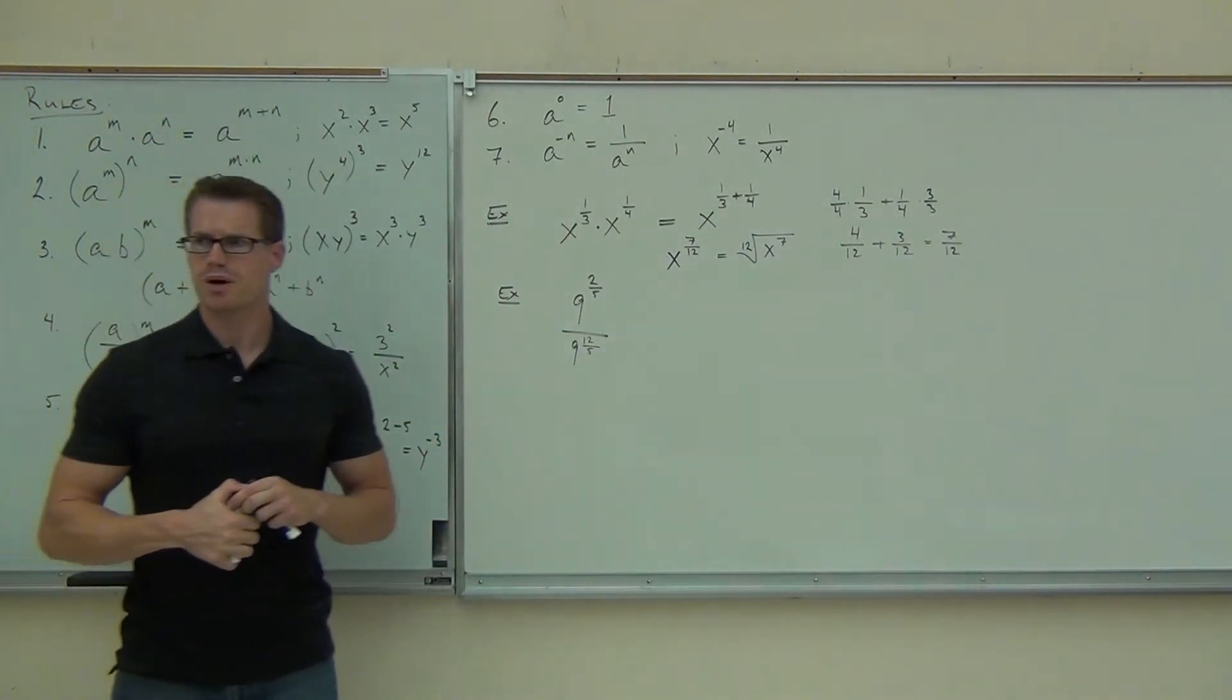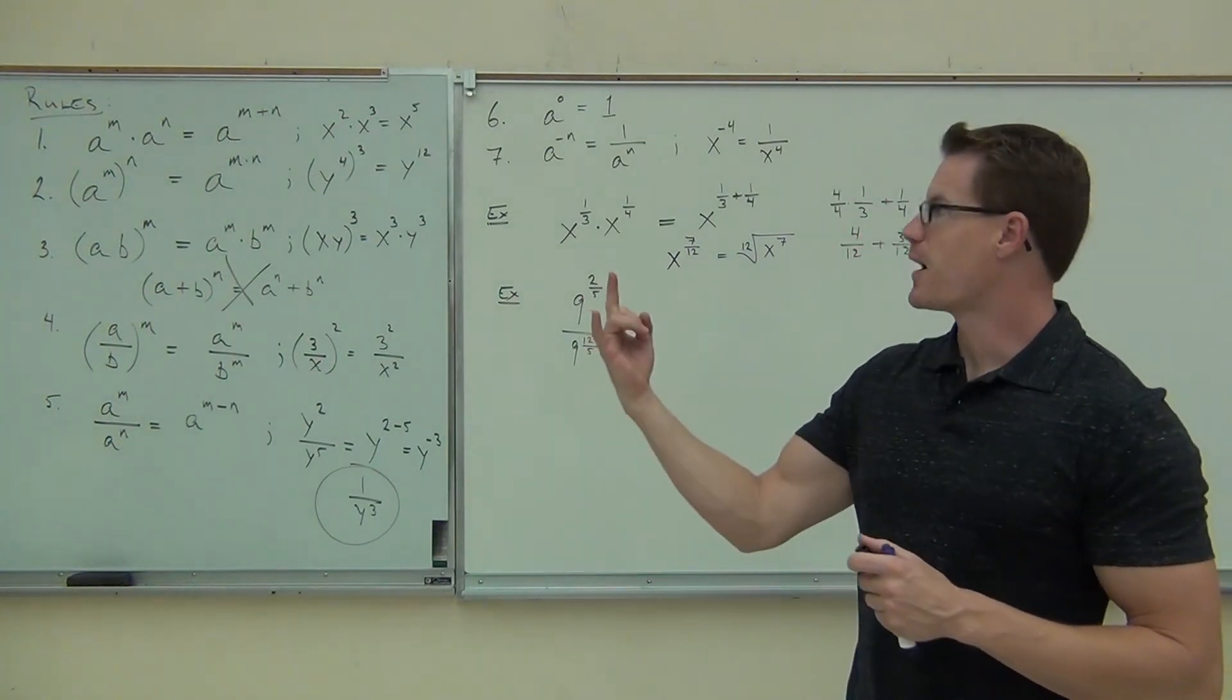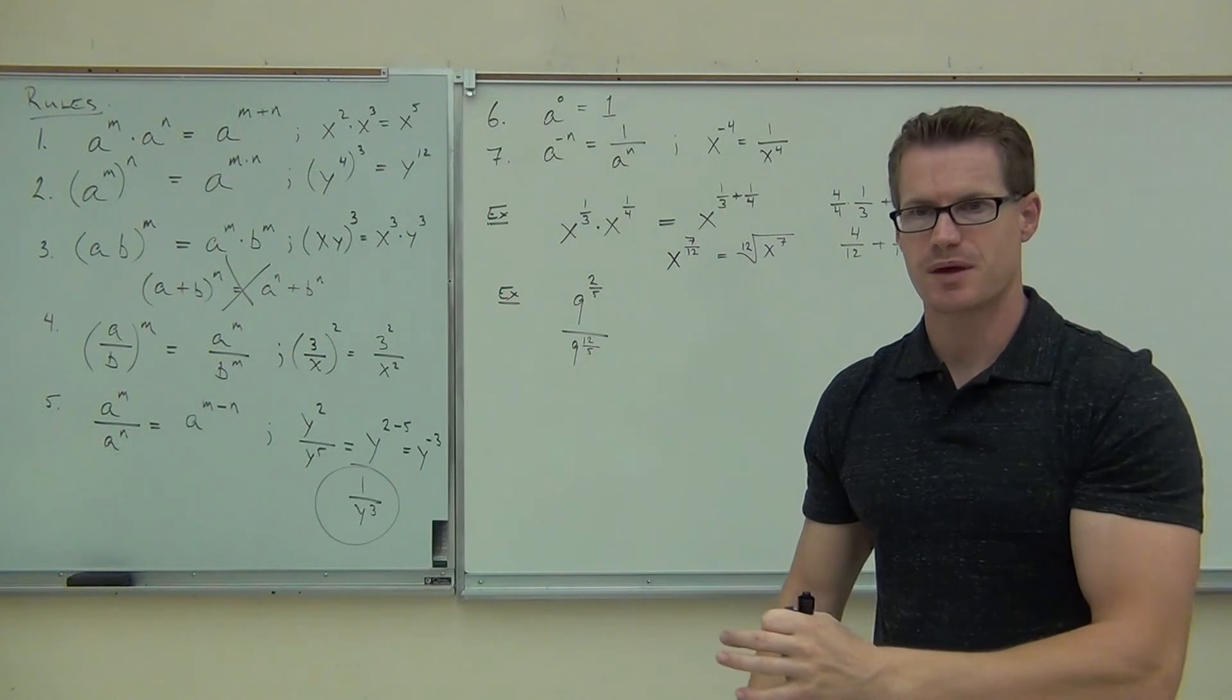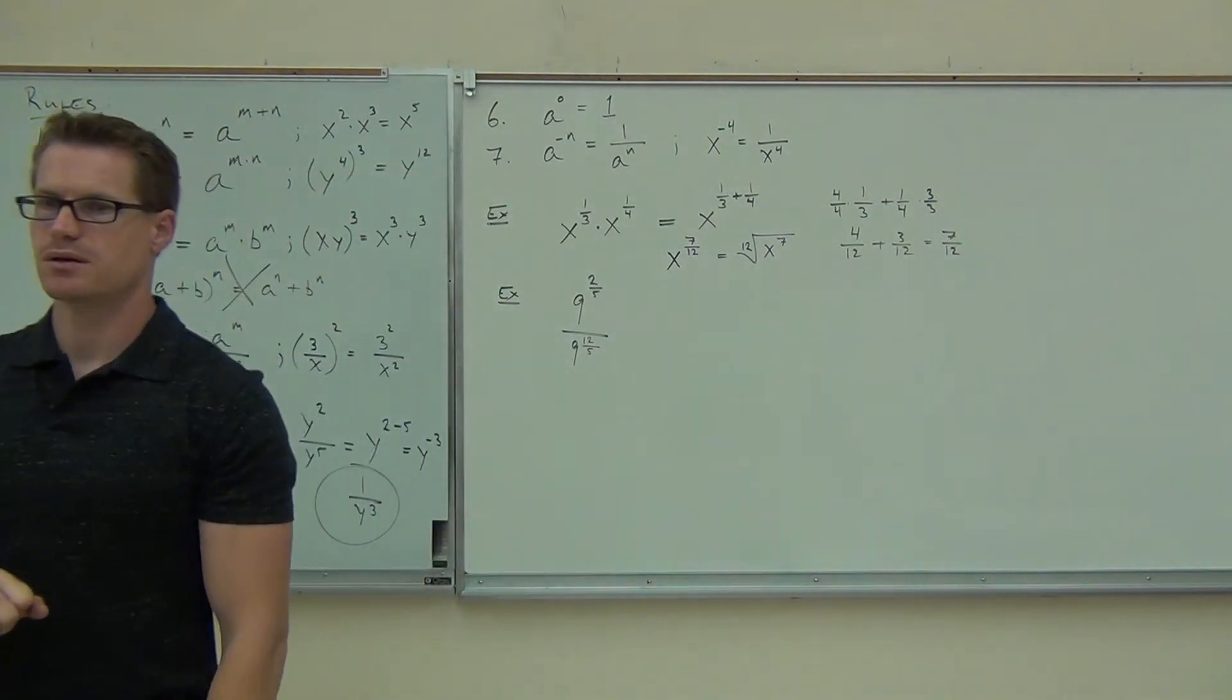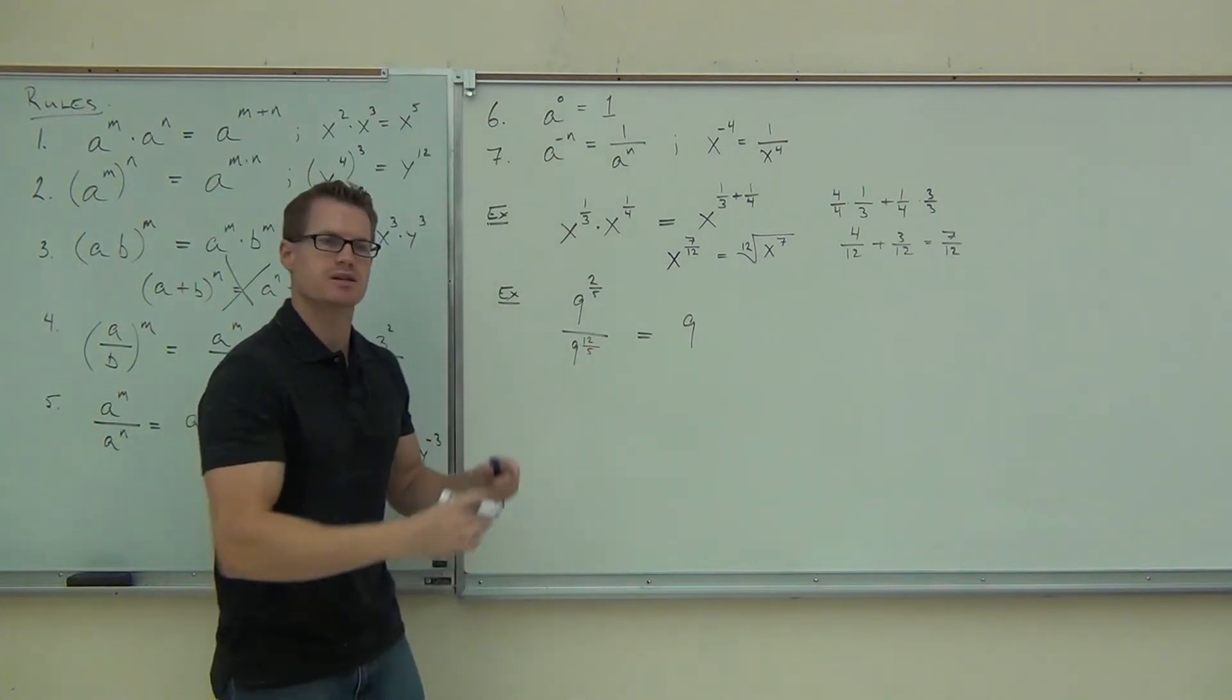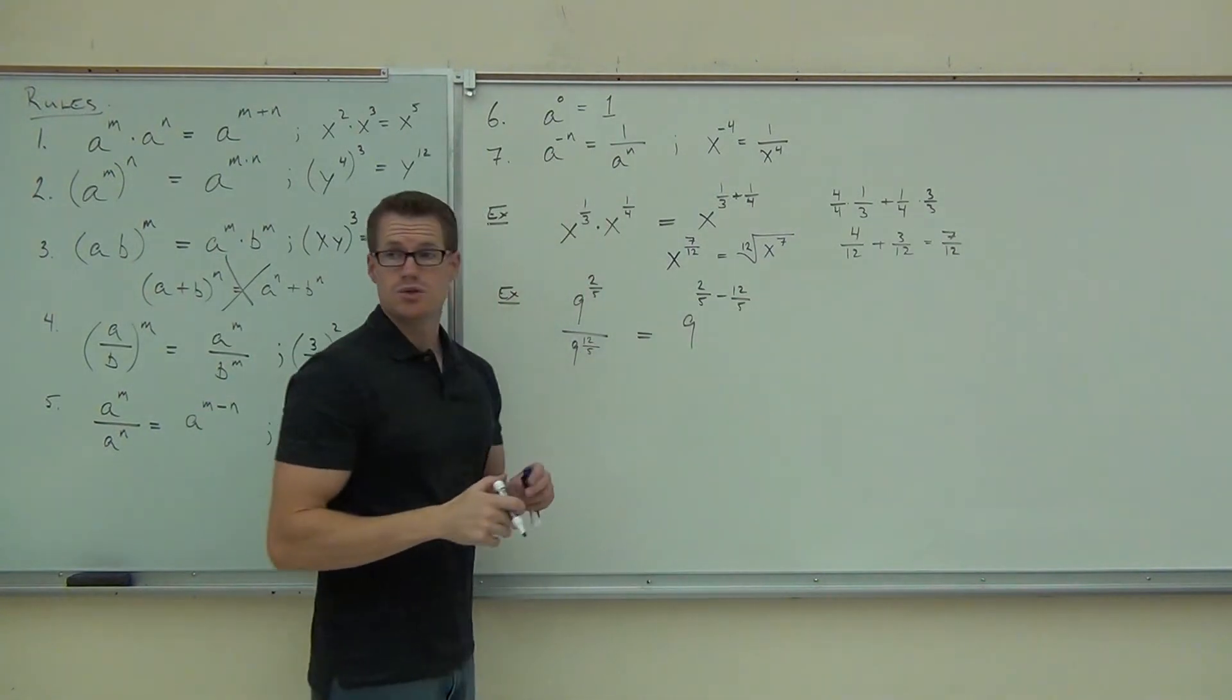9 to the 2/5 over 9 to the 12/5. Hey, let's look back at our rules. Can you tell me what rule are we most like, 1 through 7? There's only two that have fractions, right? There's 4 and there's 5. The 4 would be everything raised to a power. We're not there. We're actually at number 5, where we have something raised to a power and something raised to a power. We have the common base there. So what are we going to do with those exponents? Add, subtract, multiply, divide. What do you think? Subtract. Definitely subtract.